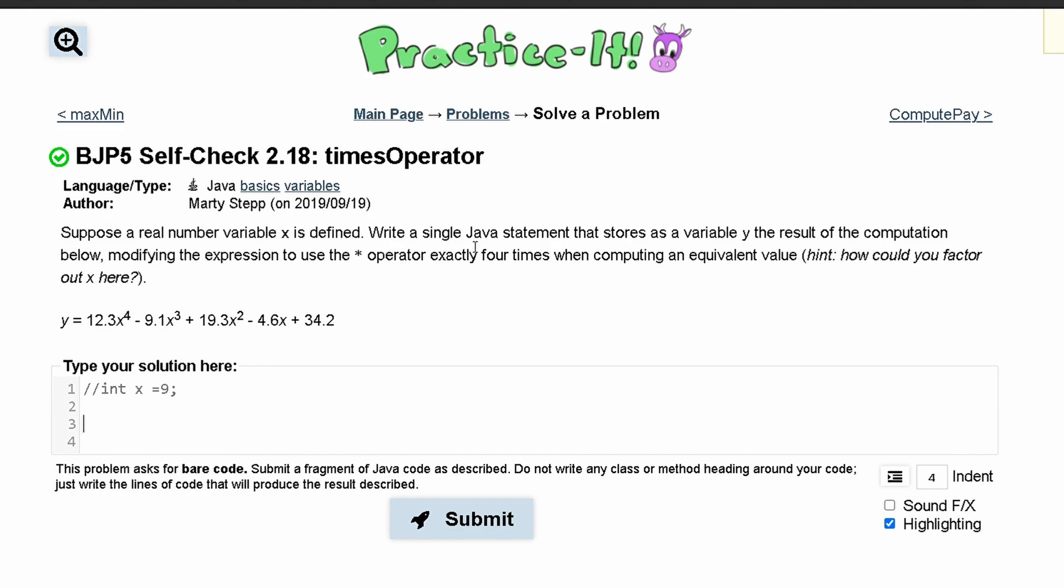So we know our y is going to be a double, so you can say double y equals... and then we notice that the only thing that doesn't have an x in here is 34.2. So we can write out 34.2 and we're finished with that part.